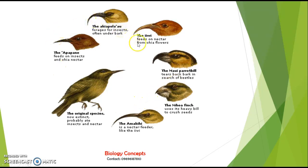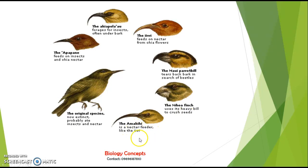Through this figure, you can easily understand the different types and sizes of beak which are found in the finches of Galapagos Island. These are the foragers for insects, often under bark; feeds on nectar from Oya flowers. Depending on the needs, which type of food they are utilizing — tears back bark in search of beetles. This finch uses its heavy bill to crush seeds, and this is a nectar feeder. This probably ate insects and nectar, and this feeds on insects and Oya nectar. This clearly distinguishes the different types of beak size.